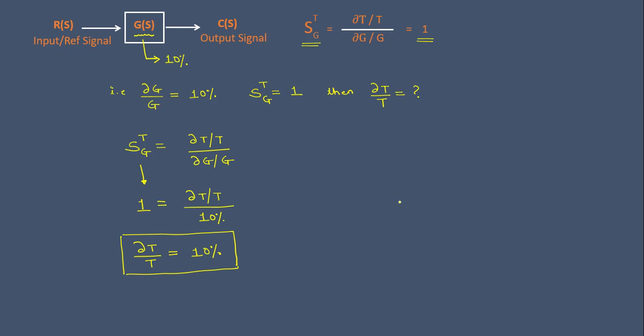In our previous video, we took the same example for a closed loop system. There, the change in forward gain element G was also 10 percent, but the change in overall transfer function was nearly equal to 0.01 percent. By comparing both, we can say open loop systems are more sensitive than closed loop systems, and we always want sensitivity to be as low as possible.